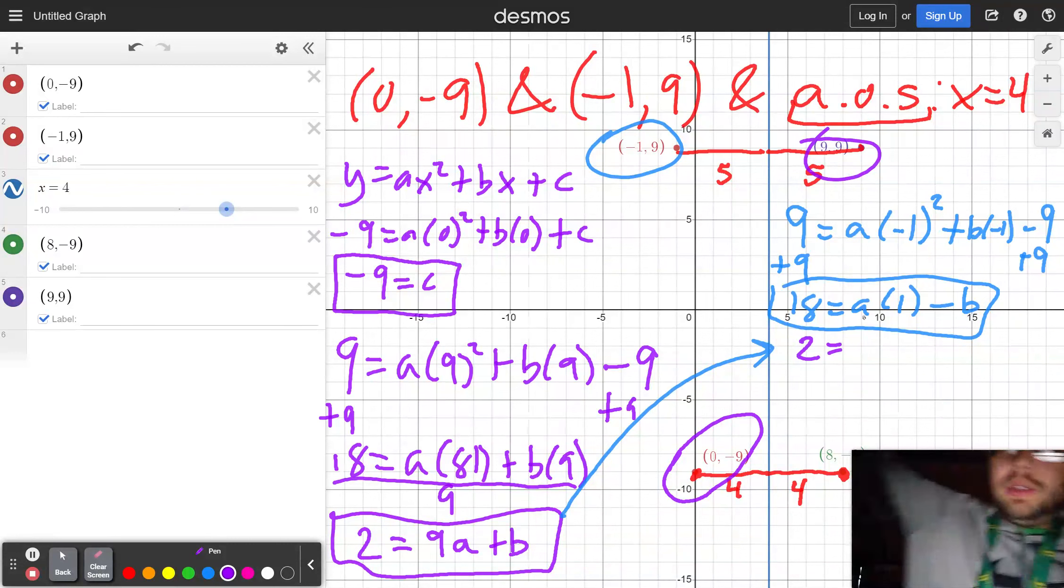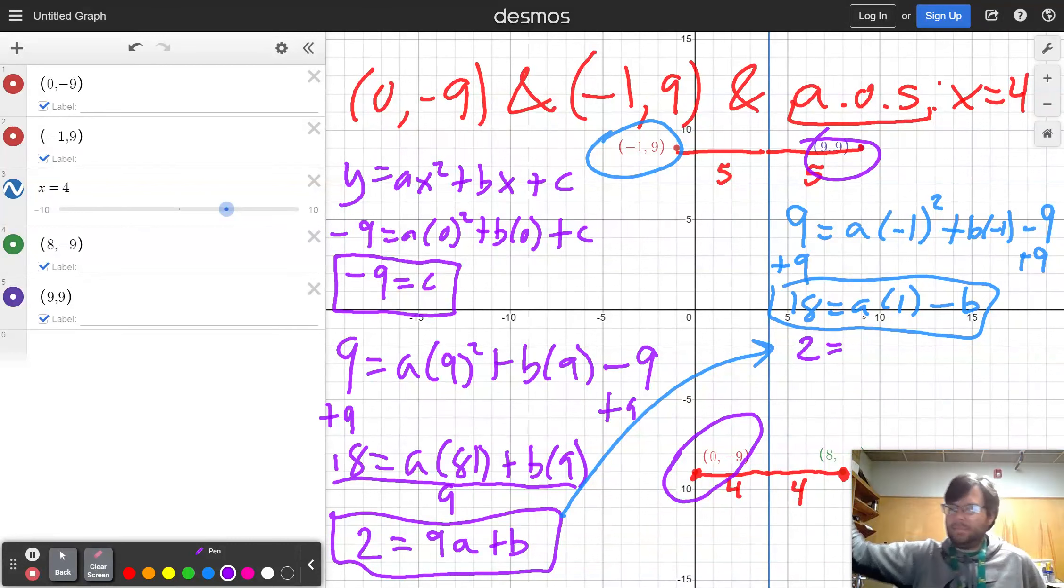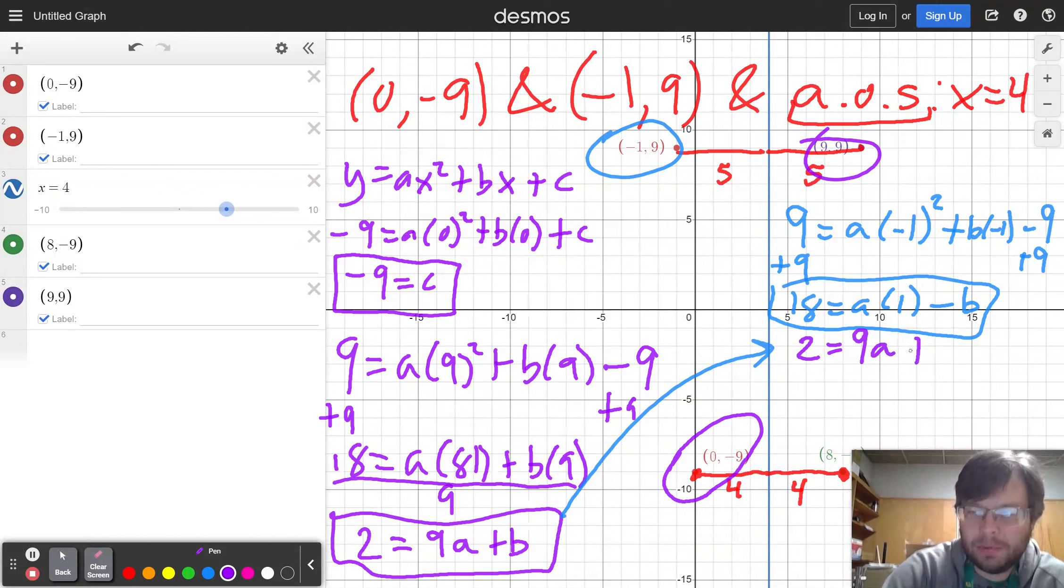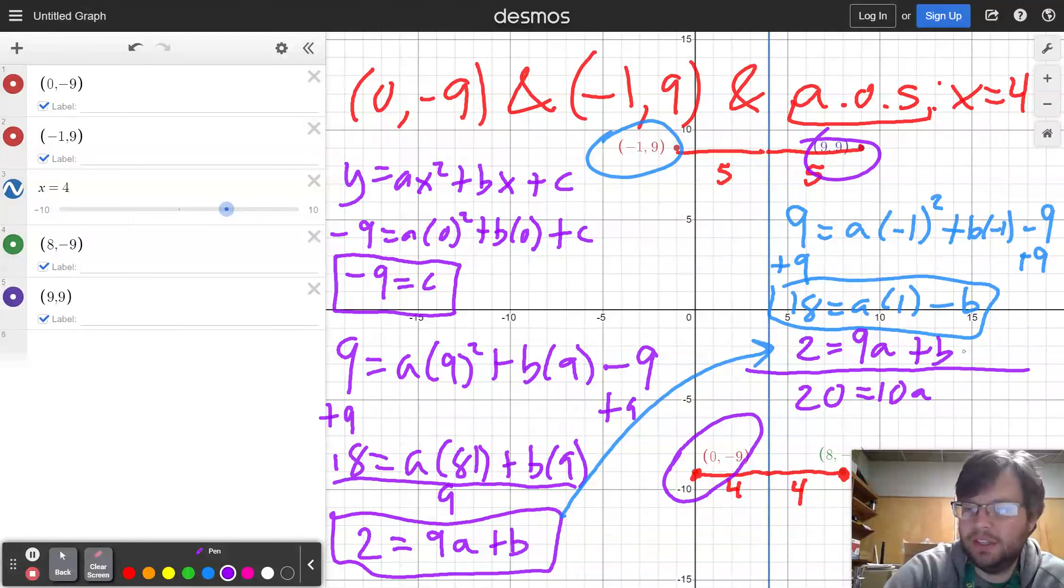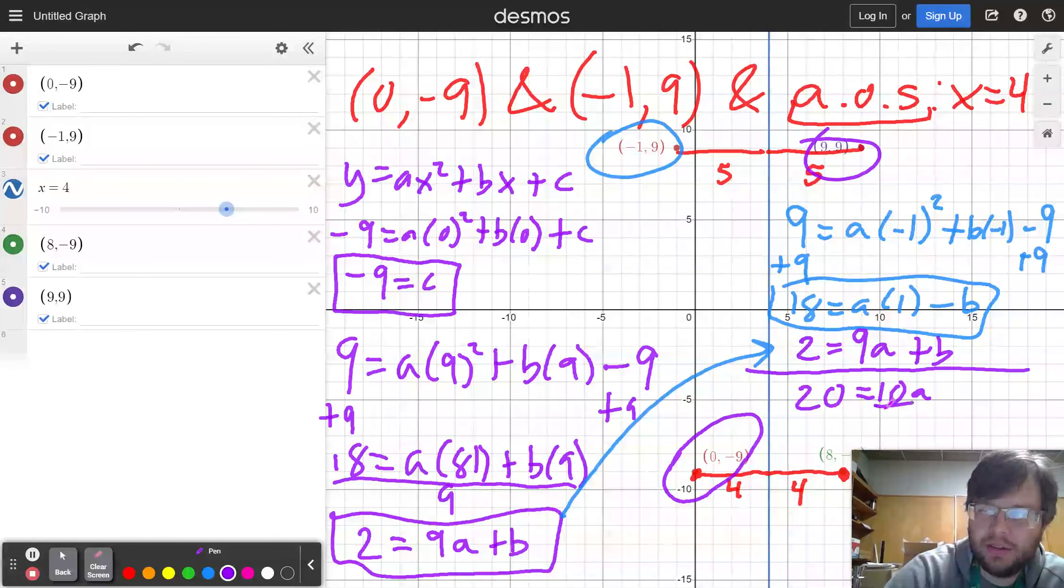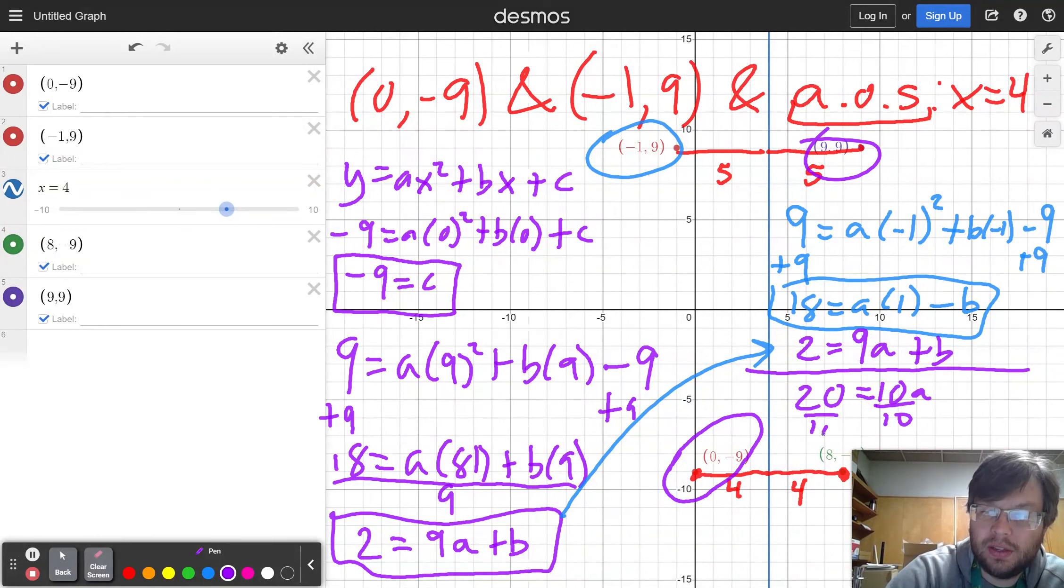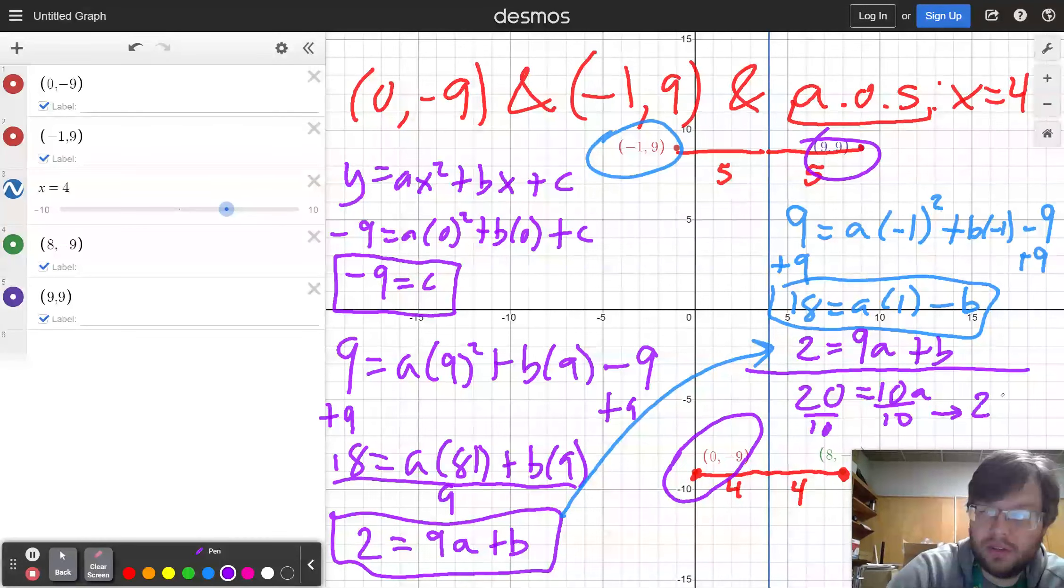2 equals 9a plus b and add those together to get 20 equals 10a. The reason I added them together is because adding a negative b and a positive b cancels out. Dividing by 10 tells me that 2 is equal to a.